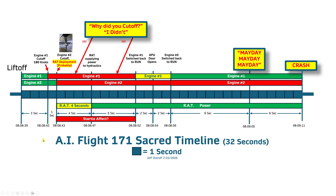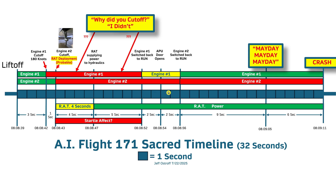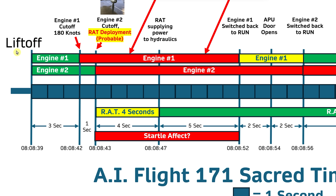Here is my new and improved sacred timeline, responding to your inputs on scale — everything is now to scale so the entire 32-second flight is shown. The timeline runs across the middle; each block represents one second. Starting at liftoff at 08:08:39, three seconds later engine one is cut off at 08:08:42 — when the plane reached its maximum flight speed of 180 knots. Then one second later, engine two is cut off at 08:08:43.